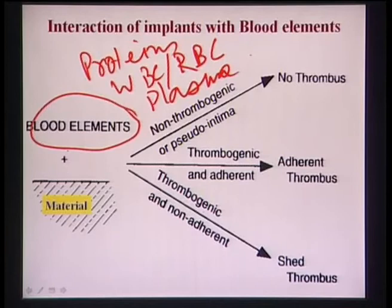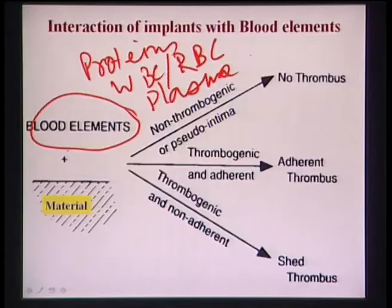When a material contacts blood, initially proteins will be absorbed first on the material surface - these will be blood proteins, different from those encountered when bone replacement materials are implanted at specific anatomical locations. There can be three types of reactions: non-thrombogenic or pseudo-intima, meaning no thrombus formation; thrombogenic and adherent; or thrombogenic and non-adherent.